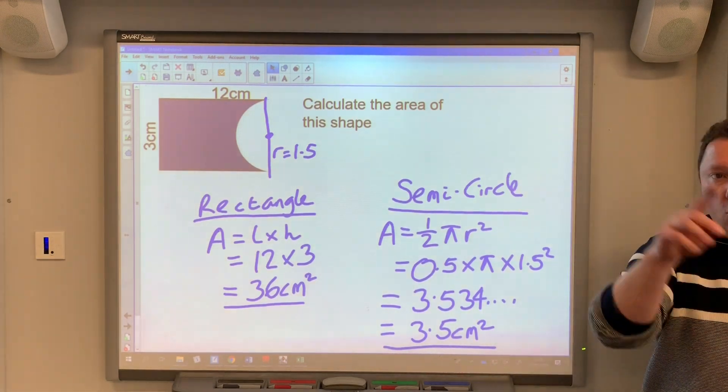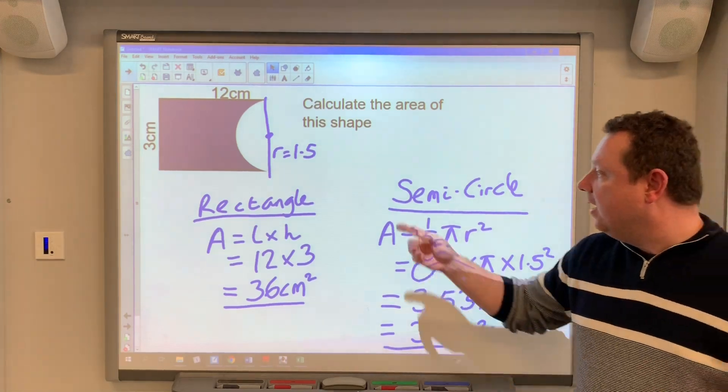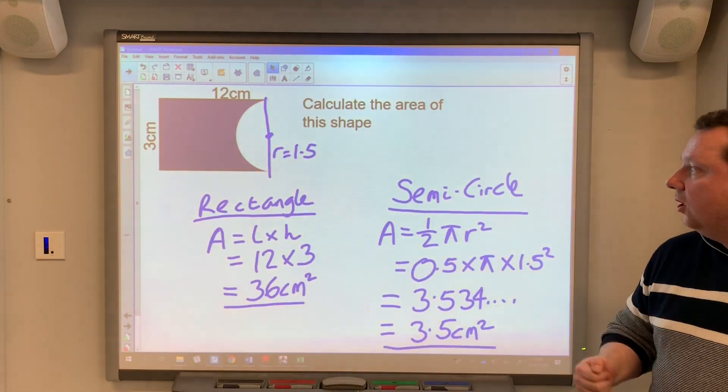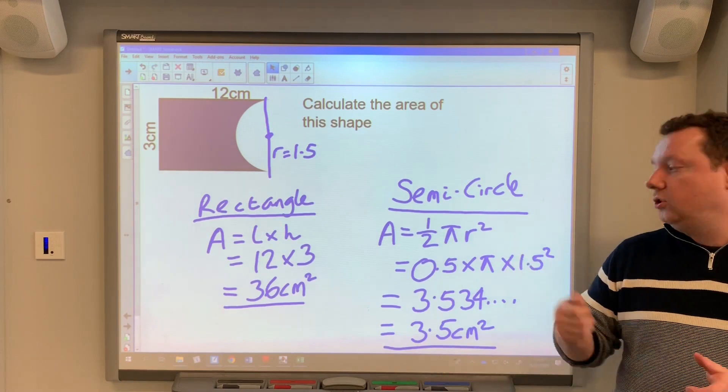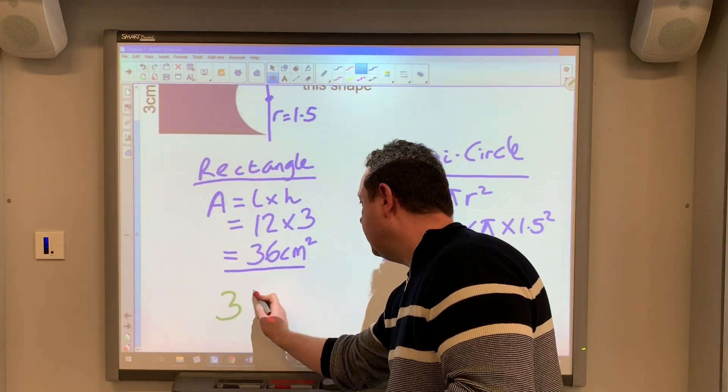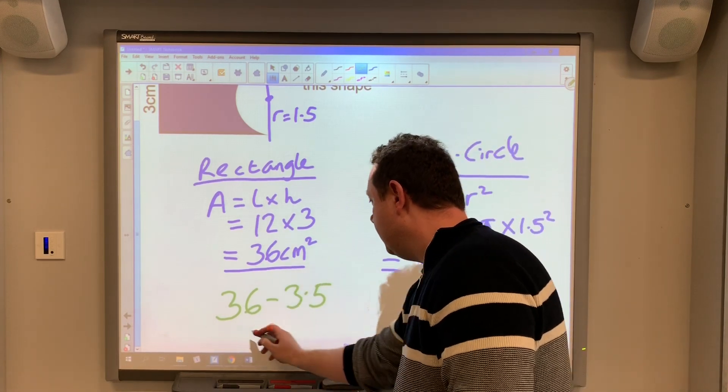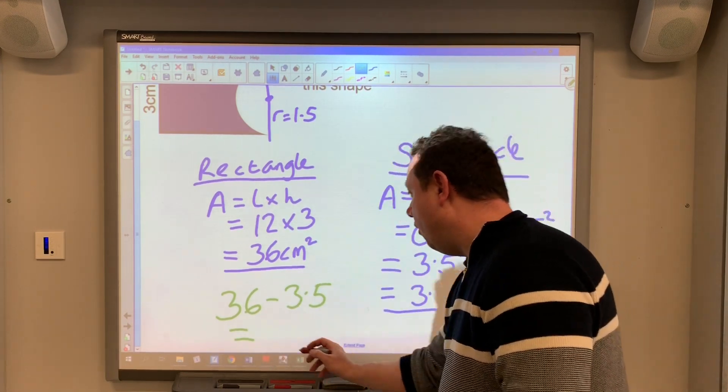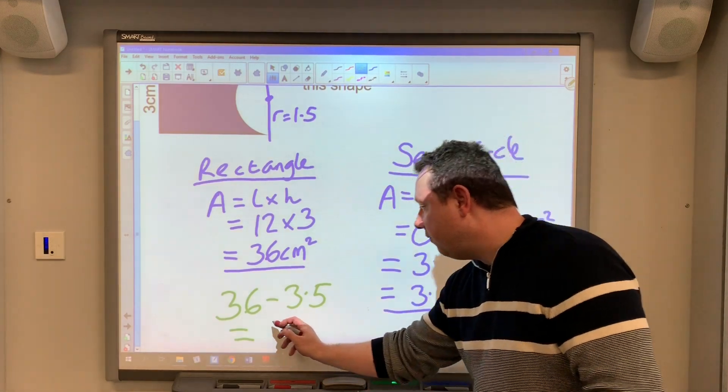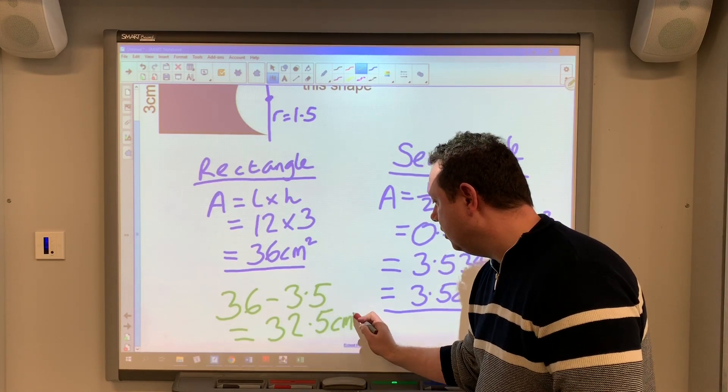So now I've got the area of the whole rectangle. I've got the area of the little semicircular part that's missing. So if I take the big rectangle and take away the semicircle, I will end up with the area of the purple shape. So I'm just going to do that now. So I've got 36 minus 3.5. So you get an answer of 32.5 centimeters squared.